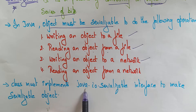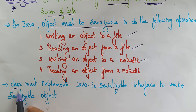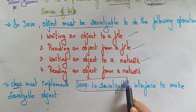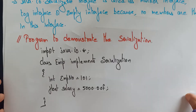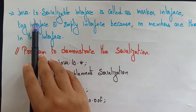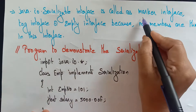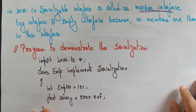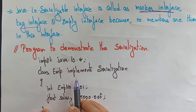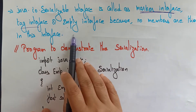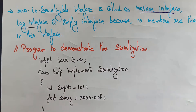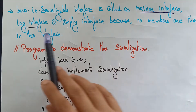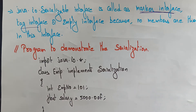A class must implement java.io.Serializable. Whatever class you create, that class must implement the java.io.Serializable interface to make its objects serializable. This interface is also called a marker interface, a tag interface, or an empty interface — because no members are defined in it.